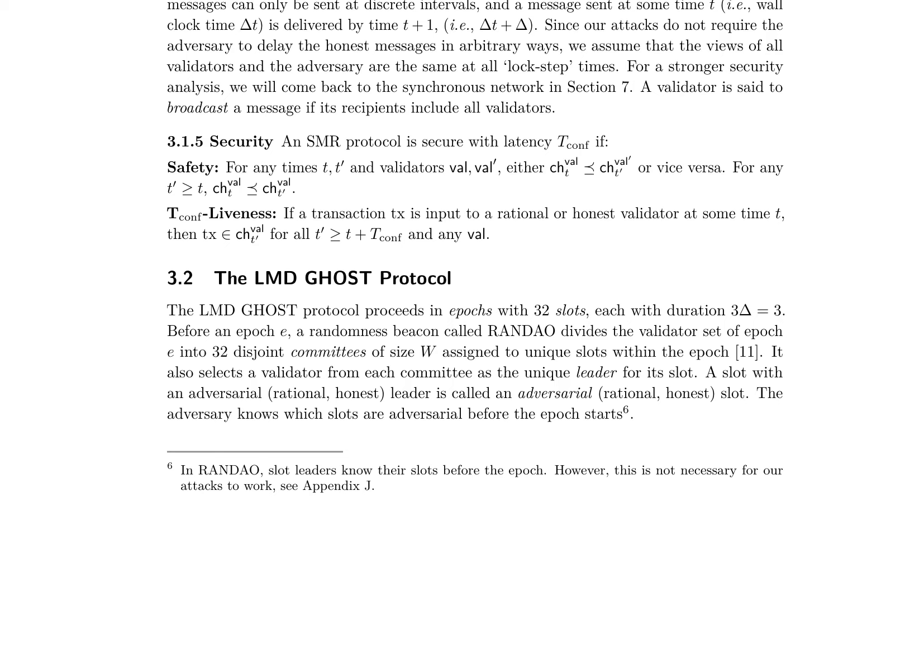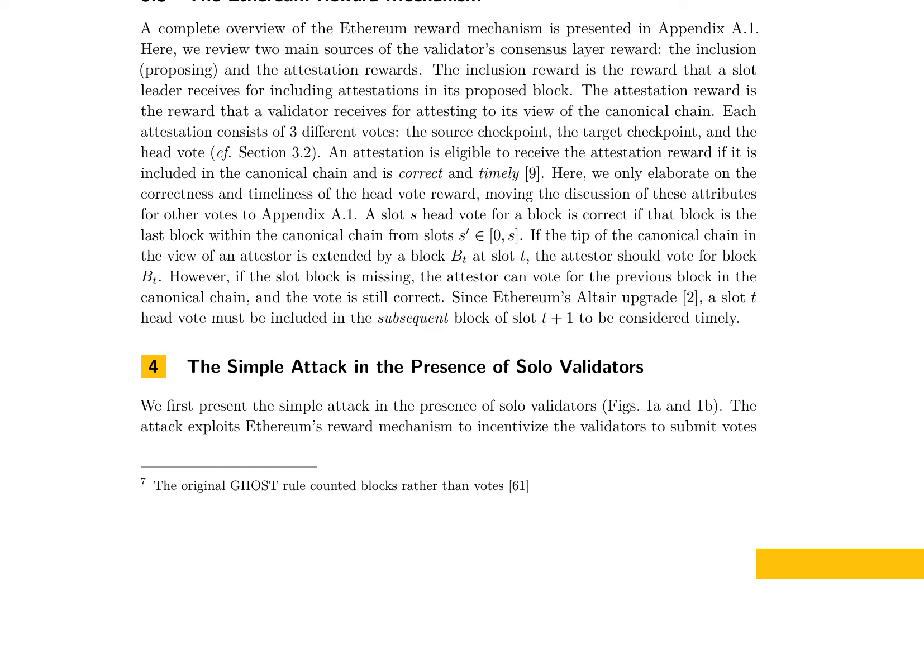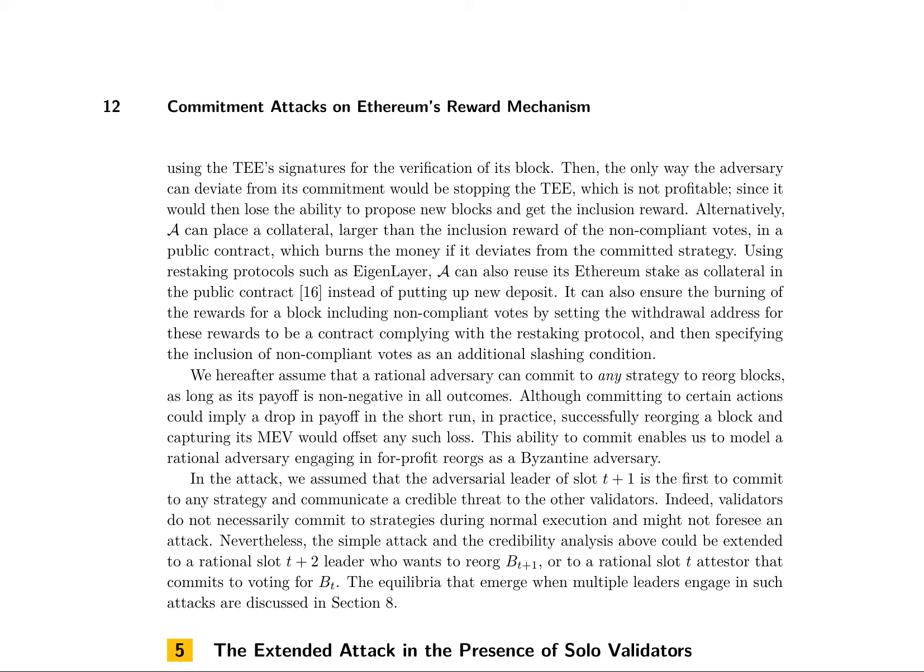In the Ethereum blockchain, validators employ the LMD Ghost fork choice rule to identify a canonical chain of blocks. The leader proposes a new block, and attestors sign and broadcast head votes for the block at the tip of the canonical chain. The fork choice rule iteratively selects the child block with the largest weight, where the weight is the number of unique head votes plus a proposal boost if the tree contains a block proposed for the current slot. The Ethereum reward mechanism consists of inclusion and attestation rewards, where the inclusion reward is for including attestations in a proposed block, and the attestation reward is for attesting to a validator's view of the canonical chain.